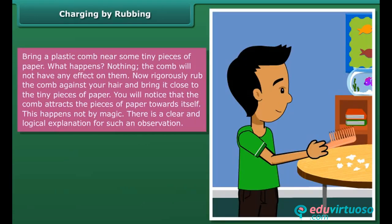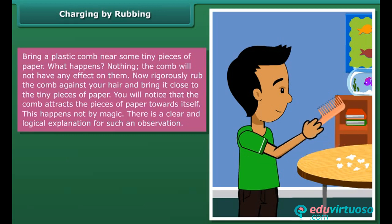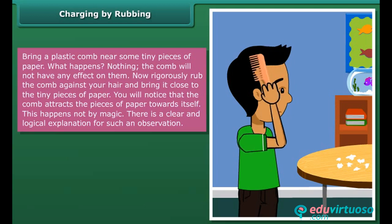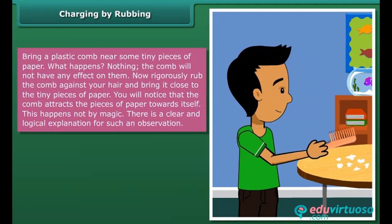Bring a plastic comb near some tiny pieces of paper — nothing happens. The comb will not have any effect on them. Now, vigorously rub the comb against your hair and bring it close to the tiny pieces of paper. You will notice that the comb attracts the pieces of paper towards itself.